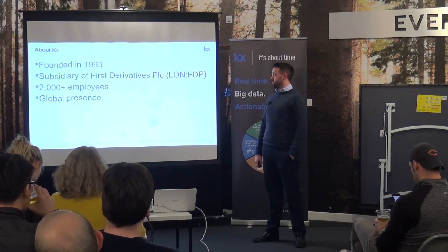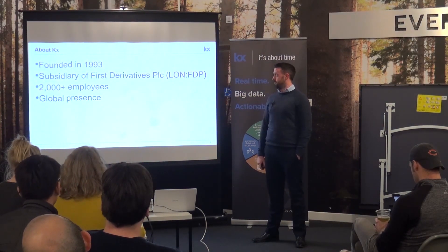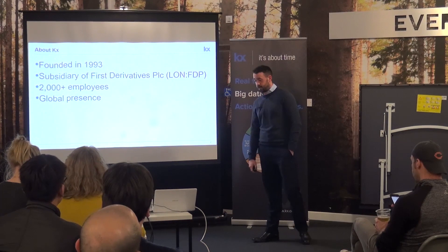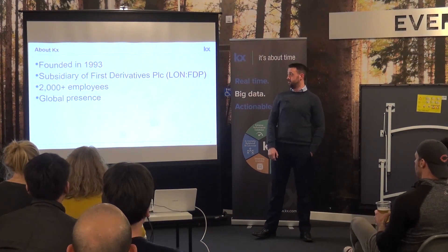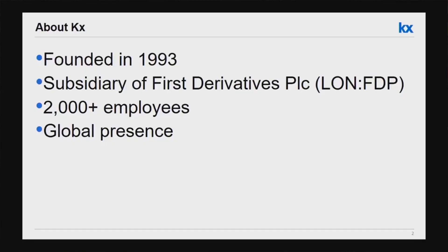KX Systems is a subsidiary of First Derivatives and was founded in 1993. It has 2,000 employees worldwide, so it's a global presence. We are all set up from Newry and obviously some of us here working in Glasgow.